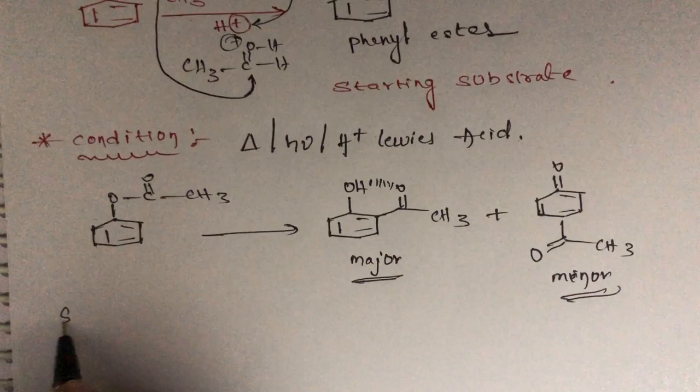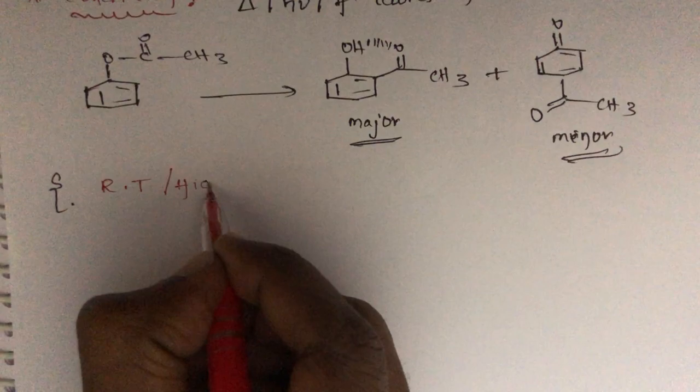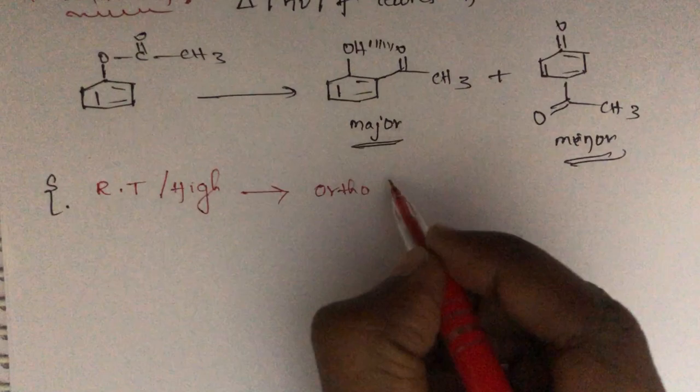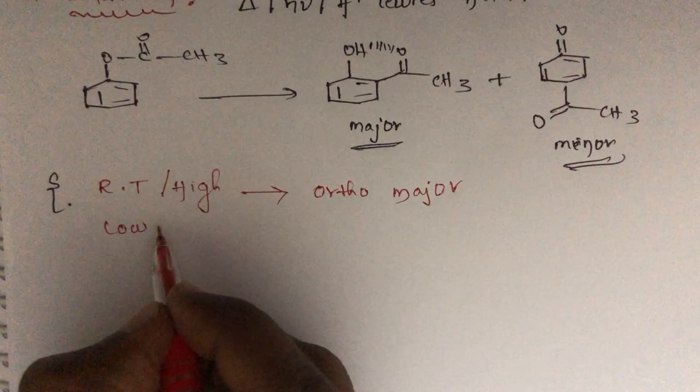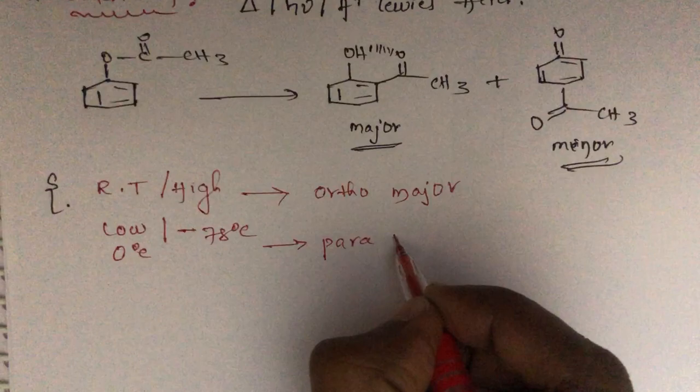Temperature also plays a role in this reaction. If the given temperature is room temperature or high temperature, you should remember that the ortho product is major. At low temperature — 0°C or minus 78°C — then you can consider the para product as the major product.